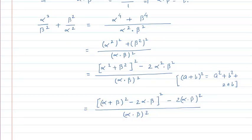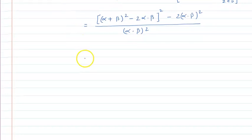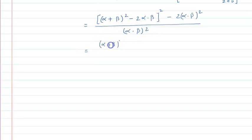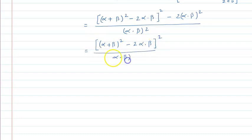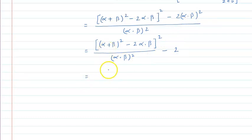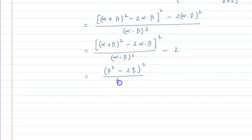अब इसे थोड़ा simplify करते हैं. Denominator को separate कर देते हैं: [(α+β)² - 2αβ]² / (αβ)², minus 2(αβ)²/(αβ)². दूसरे term में (αβ)² cancel होकर minus 2 बचेगा. अब alpha + beta की value p रखते हैं, तो (p²), और alpha × beta की value q, तो 2q. So it becomes (p² - 2q)² / q², minus 2.